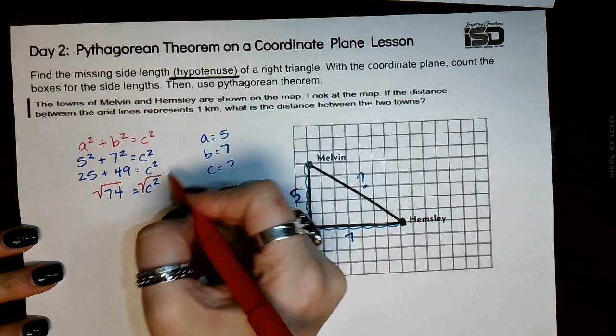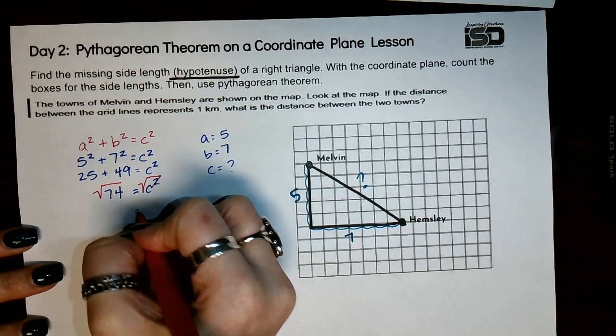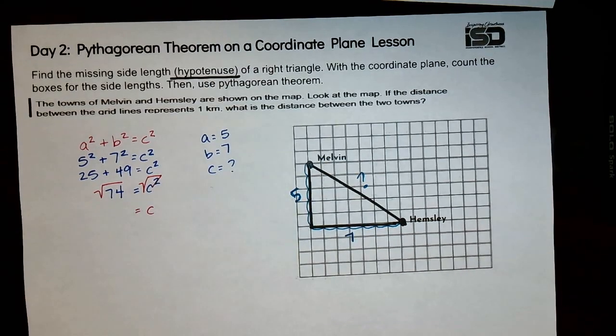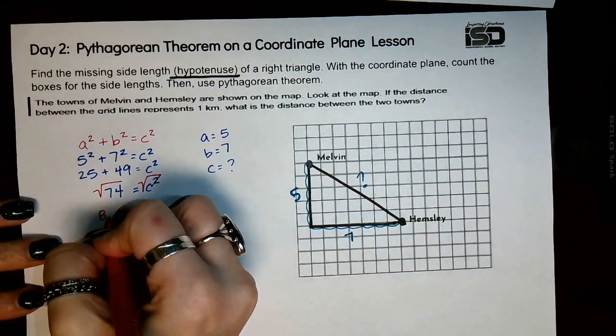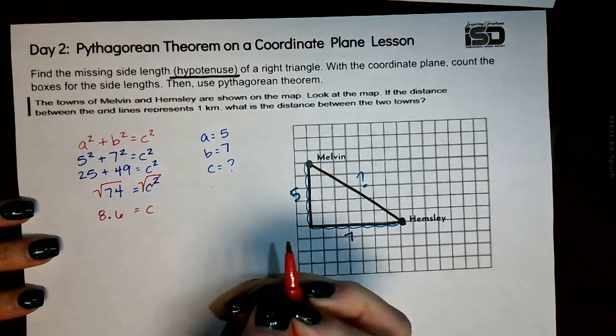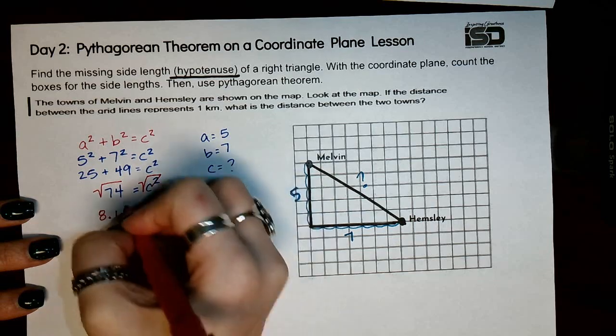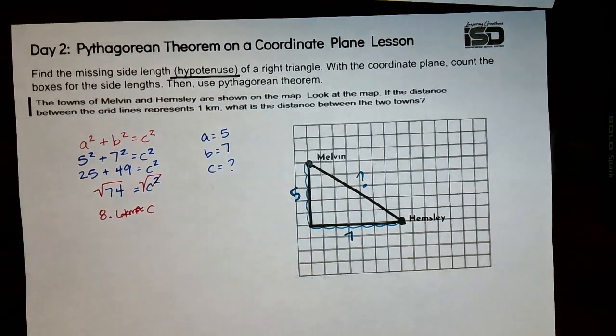So this goes away here, cancels that out. So then square root of 74, now you can use your calculator. Remember that you are going to round to that nearest tenth, so this is going to be approximately 8.6. And remember we do have to label it, so 8.6 kilometers is approximately c.